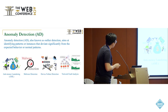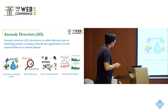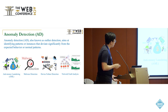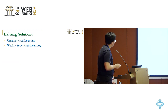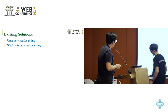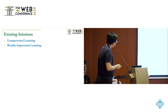Anomaly Detection (AD), aiming at identifying patterns or instances that deviate significantly from the expected behavior or normal patterns, is crucial to extensive web-based applications, including anti-money laundering, malware detection, device failure detection, and network fault analysis. Currently, various approaches have been introduced to address AD, which can be broadly classified into two categories: unsupervised learning and weakly supervised learning.